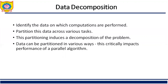Now, how do we partition the data? There are three types: data may be the input data, data may be the output data, or data may be the intermediate data. We need to identify the data on which we want to perform the computation. That is our first job — to identify the data on which computations are performed, then partition that data across various tasks. This partitioning critically impacts the performance of the parallel algorithm.